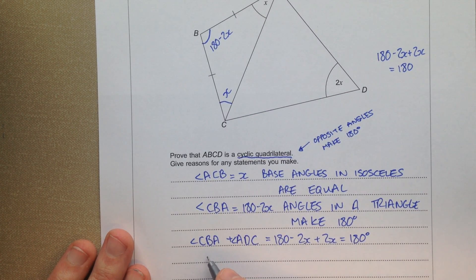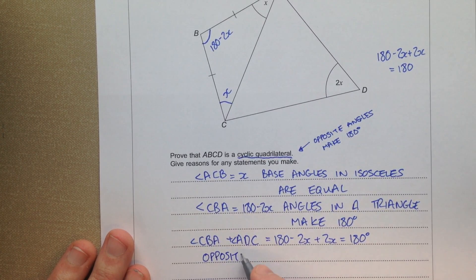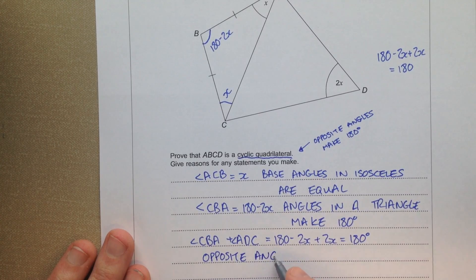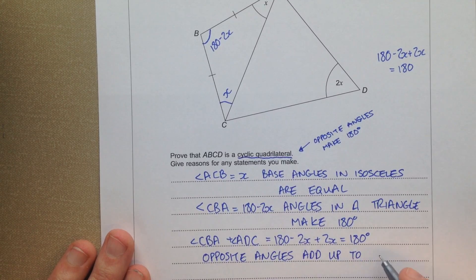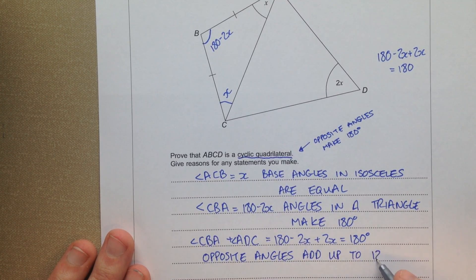So therefore opposite angles add up to 180.